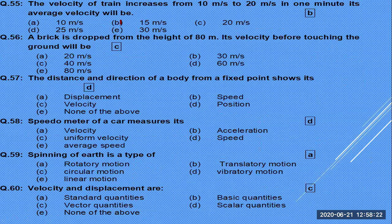A brick dropped from a height of 80 meters — to find the velocity before touching the ground, you add the two velocity values and divide by two, or use the appropriate equation of motion.